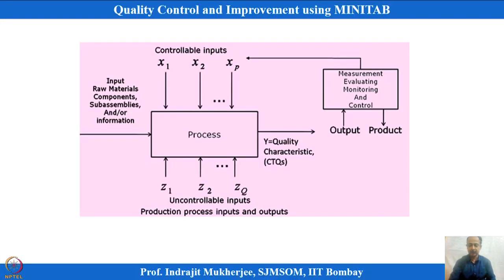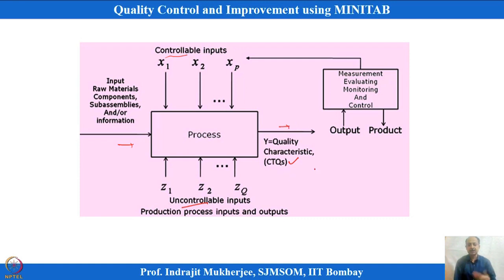Let me show what we mean using the overall process diagram. There will be control variables, uncontrollable or uneconomical factors that also change, and the CTQ coming out of the process. A component enters the process, we measure the CTQs, and try to monitor and control accordingly.